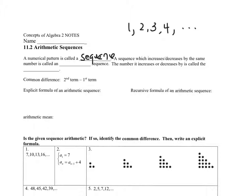A sequence which increases or decreases by the same number is called an arithmetic sequence. We usually pronounce this word 'arithmetic,' but when talking about sequences, we say 'arithmetic.' The number it increases or decreases by is called the common difference.